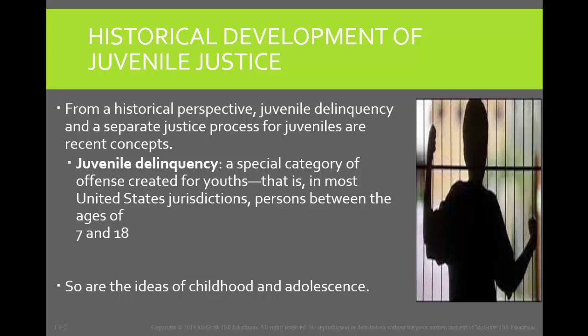At age 7, minors are considered too young to be able to form criminal intent, but also too young to have the cognizance to know what they are doing in most instances. Before the 16th century, minors were viewed as either property or as miniature adults who were expected to assume the responsibilities that adults did. This meant that minors weren't going to school for long periods of time. Instead they started working earlier to help support the family. However, not all children even had families — some lived on the streets or turned to crime to support themselves.